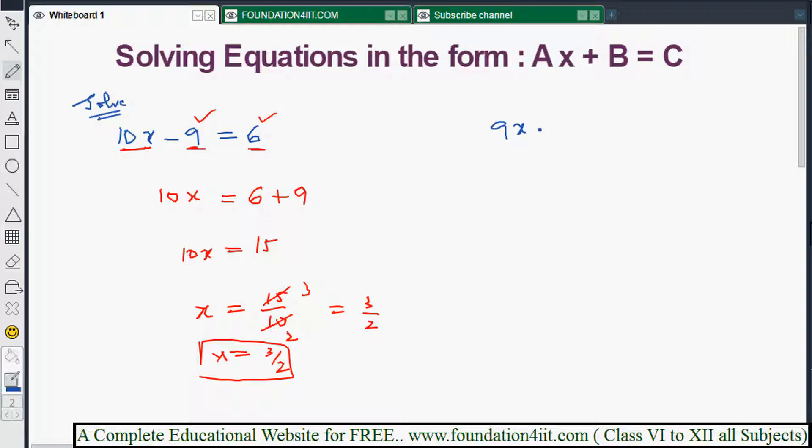9x minus 6 equals 7. First, you should take the numerals to the right side. 7 is already on the right, so when you take minus 6, it becomes plus 6. 9x stays on the left side, shifting minus 6 to plus 6 on the right side.